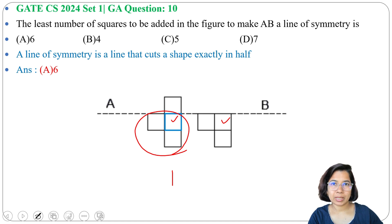So there will be a box here for matching with this, then another box here. So here we added 3 squares to make it half. Now the top part and down part both are the same, so we can say AB is a line of symmetry that makes this structure half.